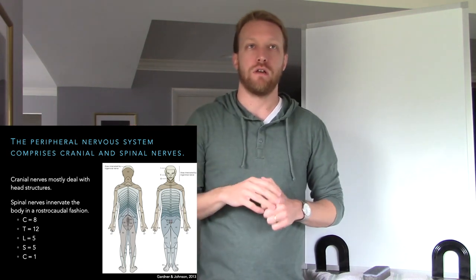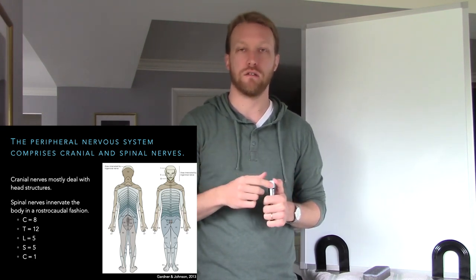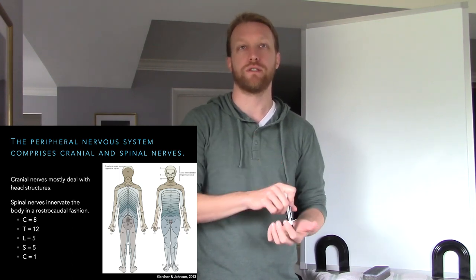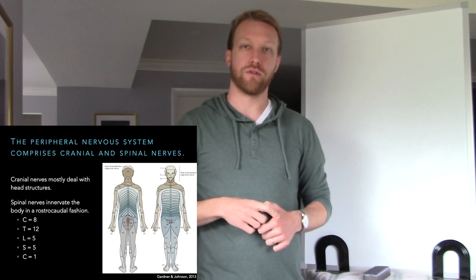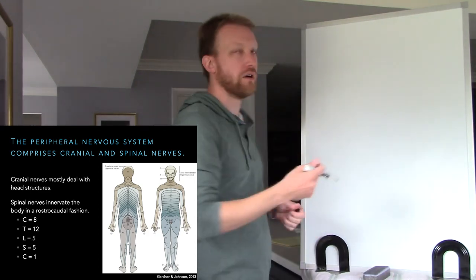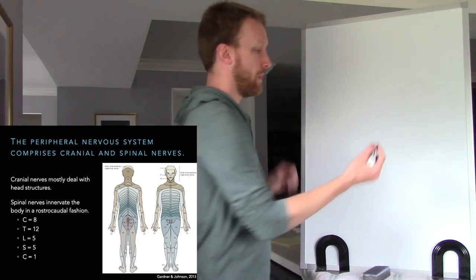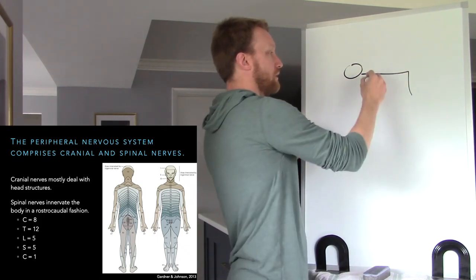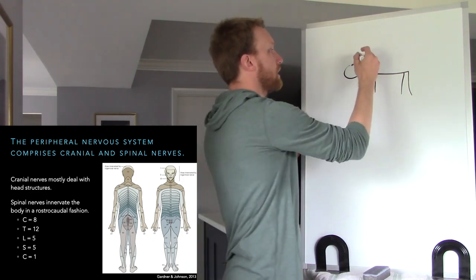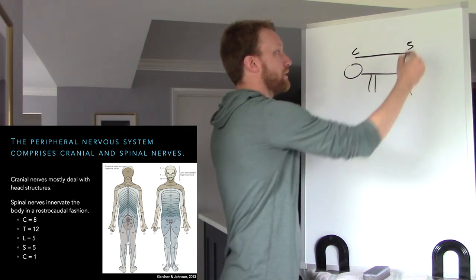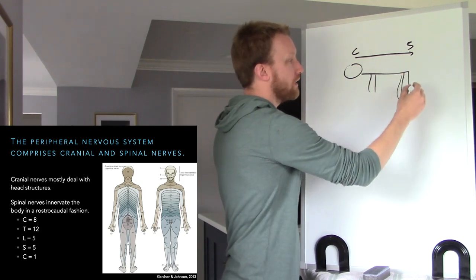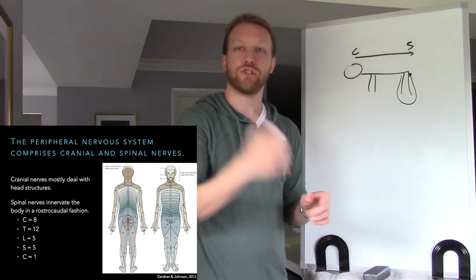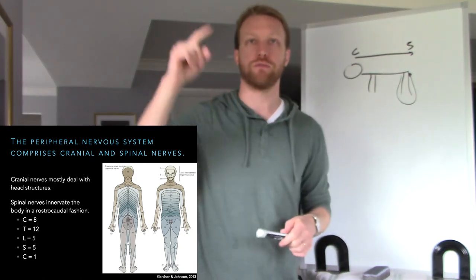Looking at the dermatomes, parts of the head are innervated by different cranial nerves, and then we have cervical, thoracic, lumbar, sacral, and coccygeal targets in an orderly arrangement. Because we're bipeds it looks a bit odd, but if humans were four-legged this would make total sense as a head-to-toe arrangement. Standing upright makes the dermatomes appear to wrap around the legs and end at the anus.